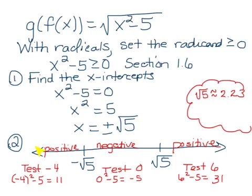So we draw a number line for the sign test, and on that number line we put our x intercepts of negative square root of 5 and positive square root of 5. Then we pick a value in each of these regions to test.